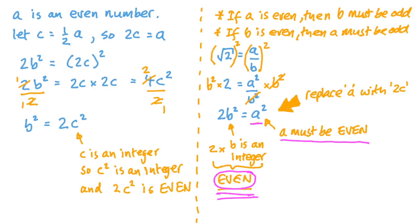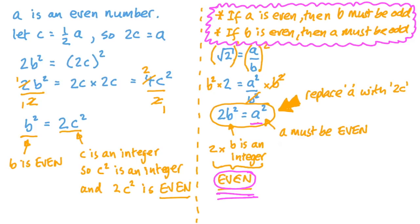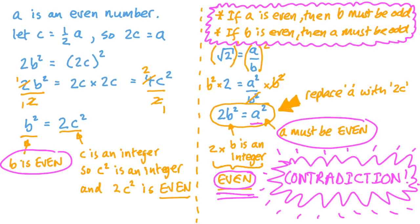Then over on the right-hand side, we said c is an integer. So c squared, an integer times an integer, is also an integer. And this expression here, 2 times an integer, must give us an even result. Then using the same logic we used over here to prove that a must be even, we can say that b must also be even. But wait a minute, we said right near the beginning that if a is an even number, then b must be odd. And if b is an even number, then a must be odd. Now we've just shown that a must be even, and b must be even. This is a contradiction. We've shown that b must be both odd and even at the same time.